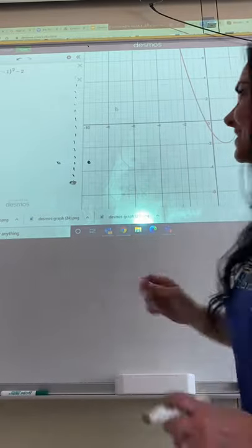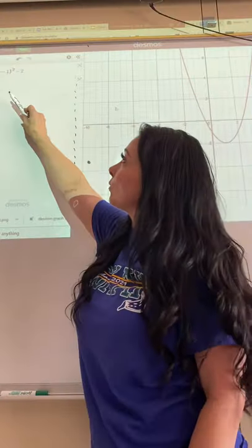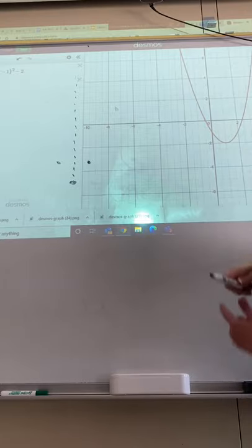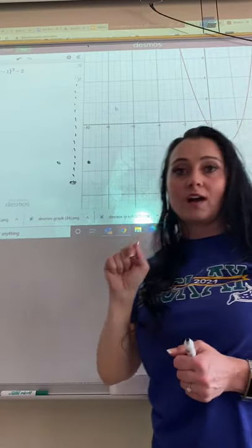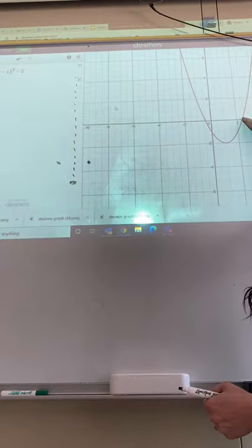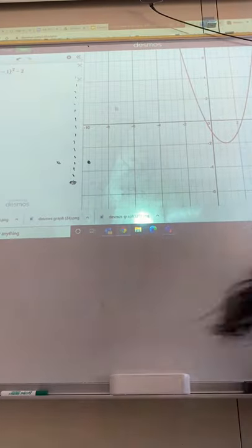All right, so there's Desmos. You type in your y equals x minus one squared minus two, your graph shows up, and then what you can do is use your mouse and hover over these roots and it'll tell you the exact amount.